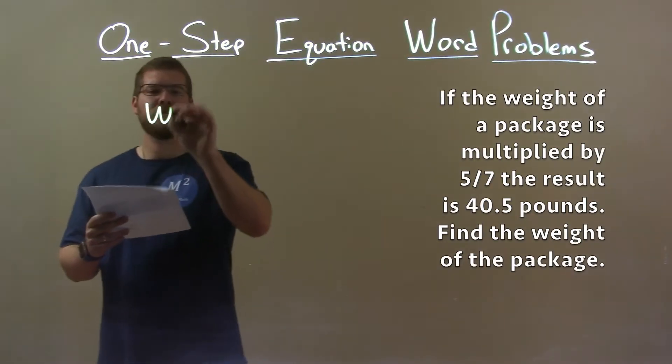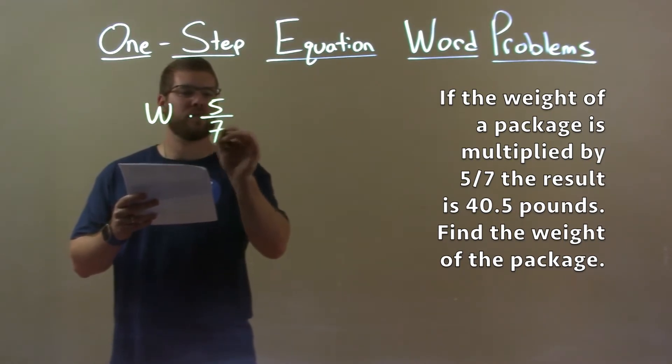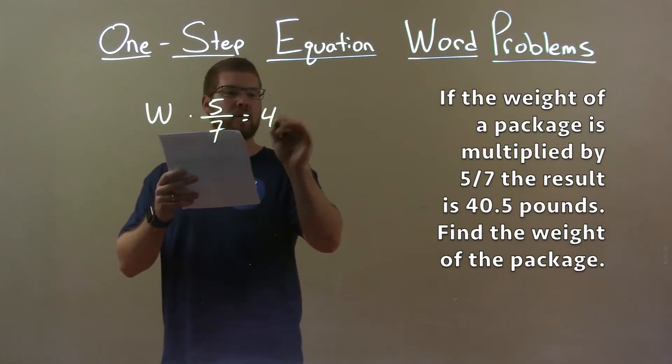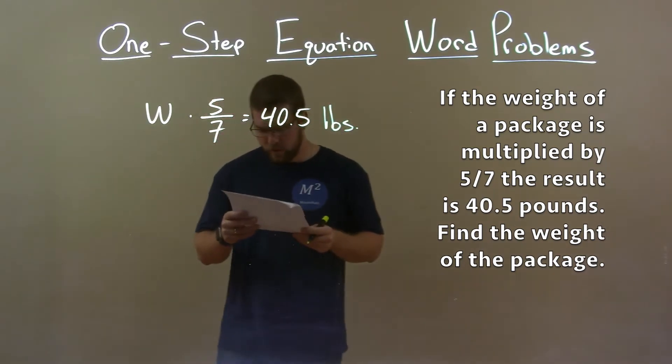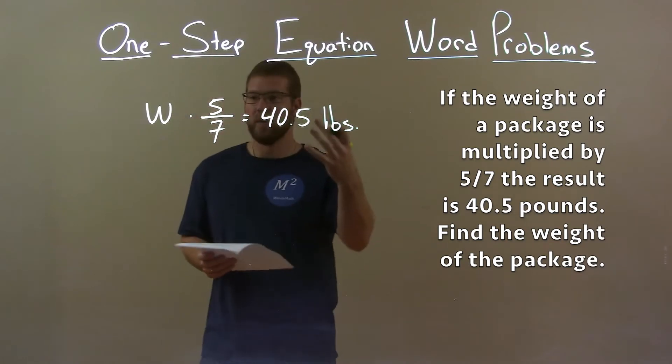So, they tell us the weight of the package, w, if it's multiplied by five-sevenths, we know the result is 40.5 pounds. Okay, meaning to find the weight of the package. Alright, with that information we have in our equation here.